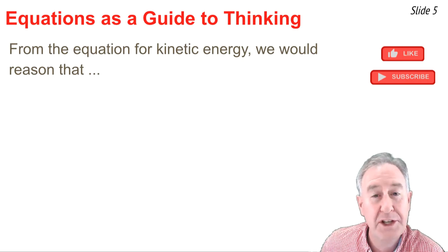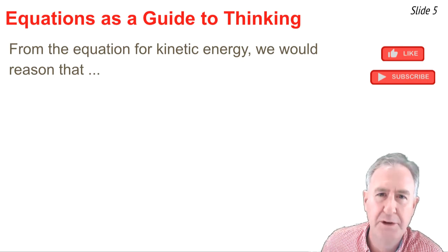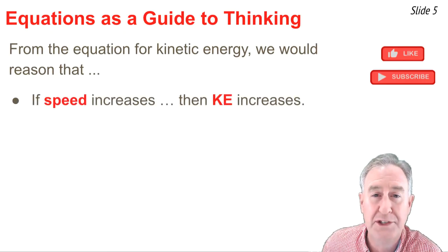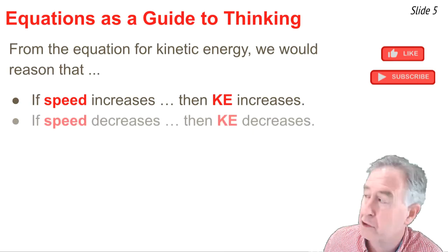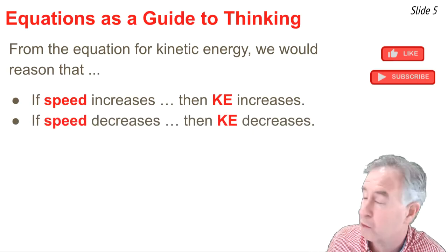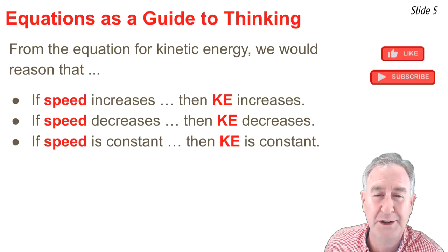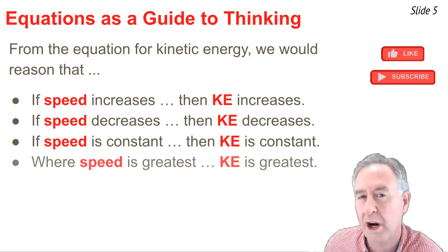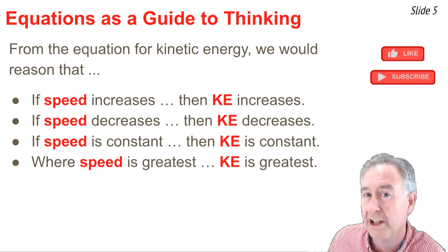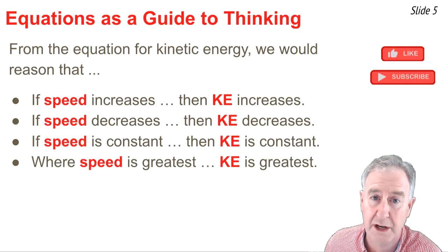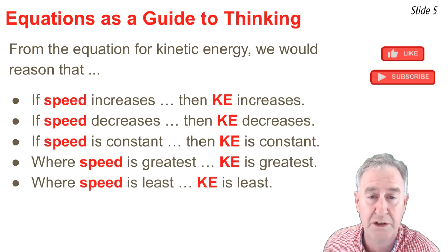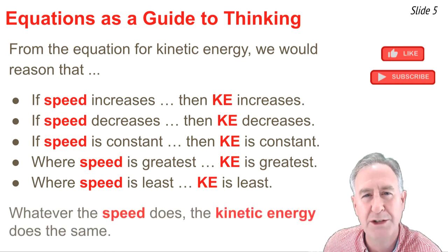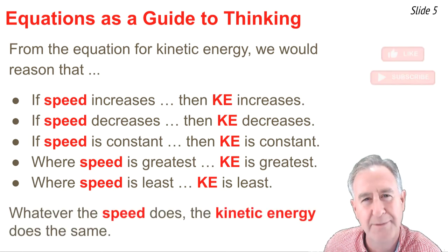We can use the kinetic energy equation as a guide to thinking. Let me demonstrate how. From the equation for kinetic energy, we would reason that if the speed increases, the kinetic energy would increase as well. And if the speed decreases, the kinetic energy would decrease as well. If the speed is constant over the course of a motion, the kinetic energy is constant. And wherever the speed is greatest over the course of a motion, that's where the kinetic energy is greatest. And wherever the speed is least, that's where the kinetic energy is the least. Whatever the speed is doing, the kinetic energy is doing the same thing.